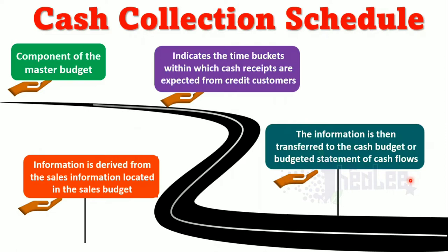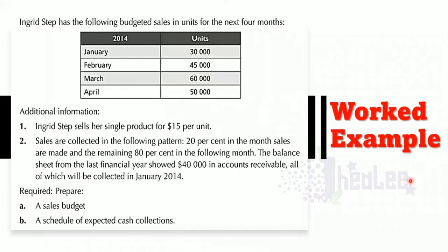The question I'm going to look at is taken from the Collins Cape Accounting Revision Guide. It reads: Ingrid Step has the following budgeted sales in units for the next four months. You are given four months and the units for each month in 2014.